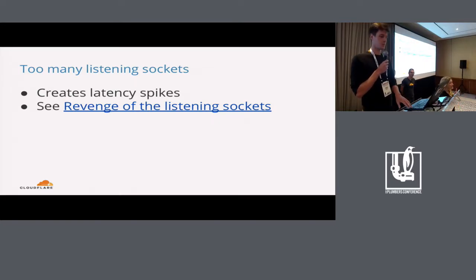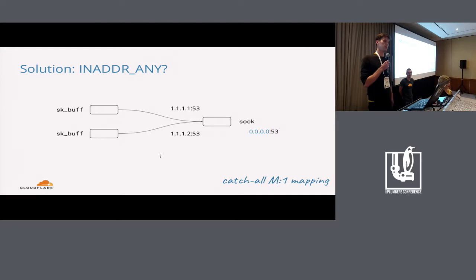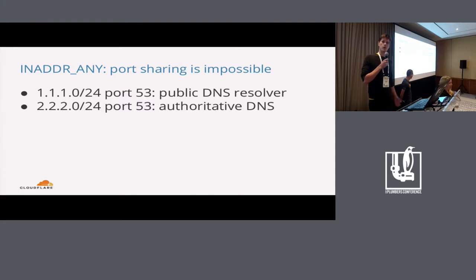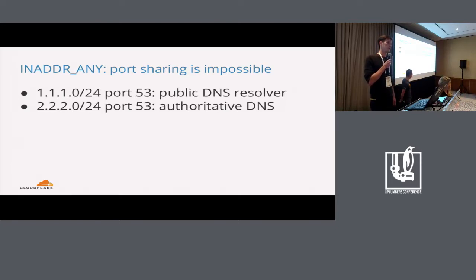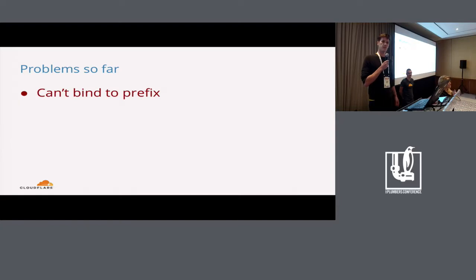So that doesn't work. Another option might be that we could just listen on any — create a single catch-all mapping for a specific port. It doesn't matter what the destination IP is, we'll still receive the traffic. But this doesn't work either because we have all services running everywhere. For example, we run a public DNS resolver called 1.1.1.1 on port 53 on one prefix, but on another prefix we might be running our authoritative DNS server. So we can't really bind to a prefix — it doesn't exist as a concept.